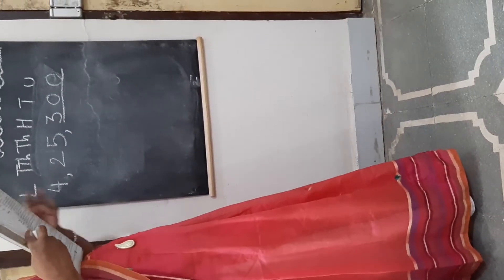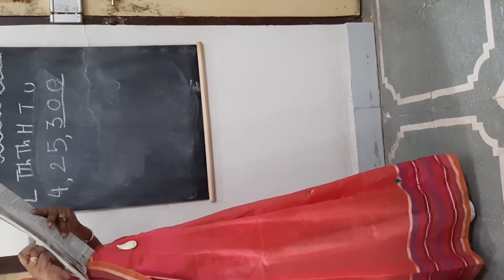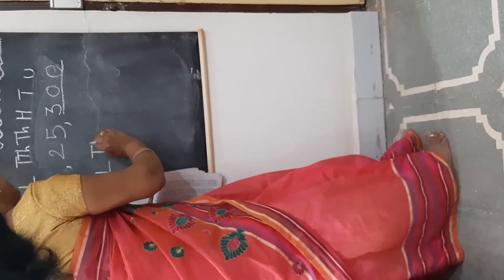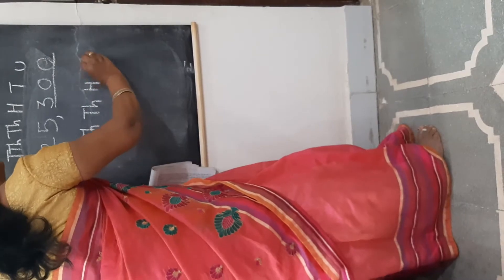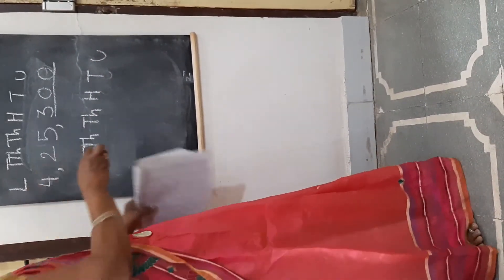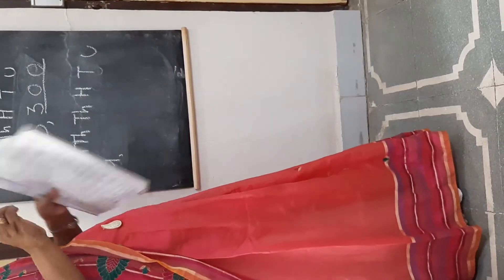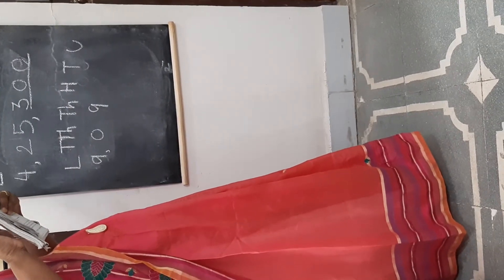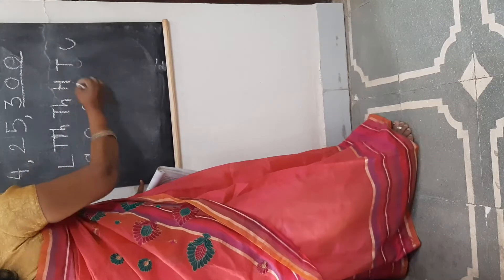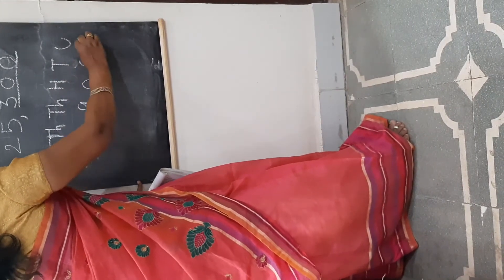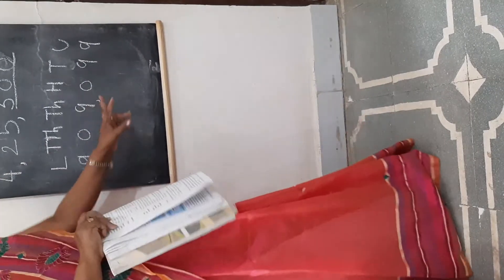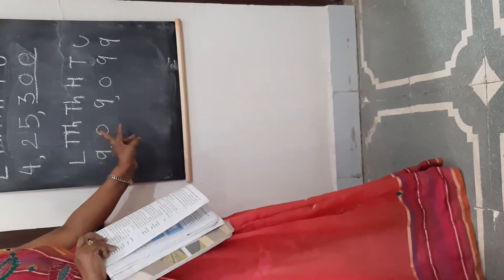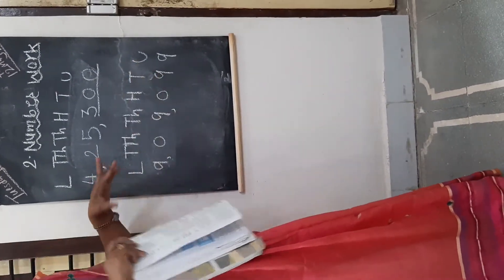The next number is 9 lakh, 9,099. Note down the places: 9 lakh, 9,000. So at the 10,000 place, 0 will be there. Then 9,000 and 99 — at the 100 place, 0 is also there. So the number is 9,09,099. When you write the place names first, there is no chance of mistakes, and you automatically understand where to write zeros.